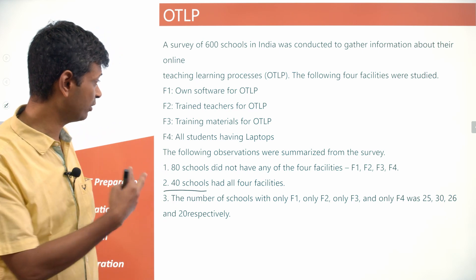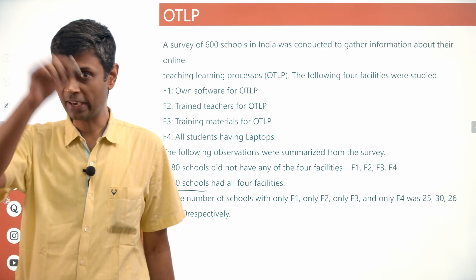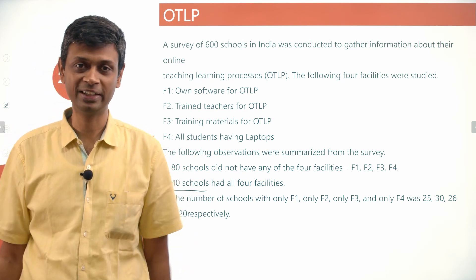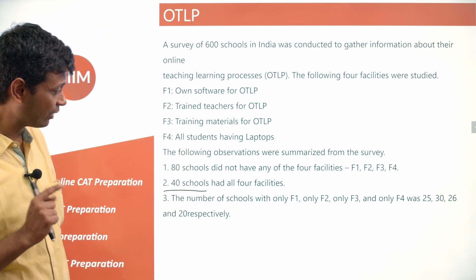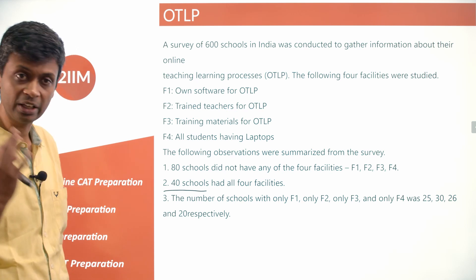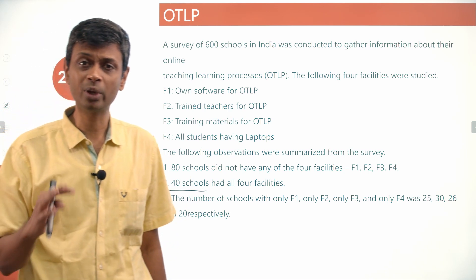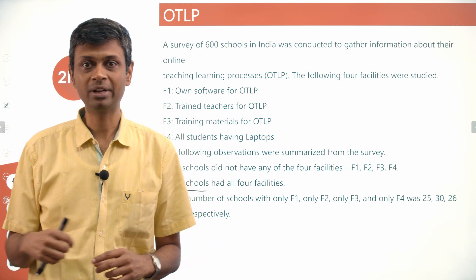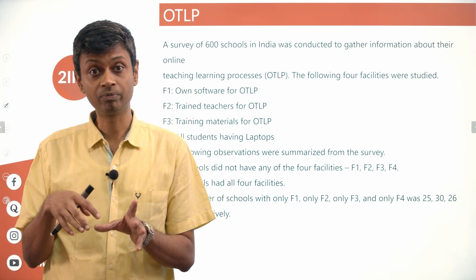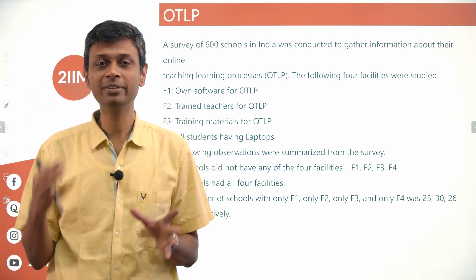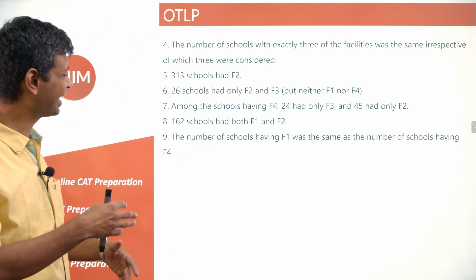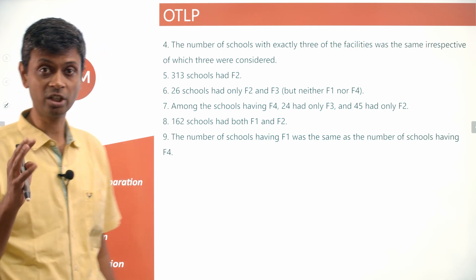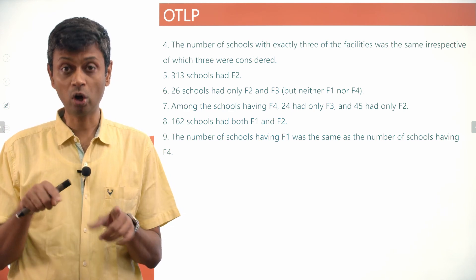Rather than drawing confusing circle diagrams, there's a very interesting alternative way of presenting data for four sets. The data tells us: only F1, only F2, only F3, and only F4 were 25, 30, 26, and 20 respectively. You can sense you've got to draw a diagram — beyond these numbers you can't retain everything. The number of schools with exactly three of the facilities was the same irrespective of which three were considered.